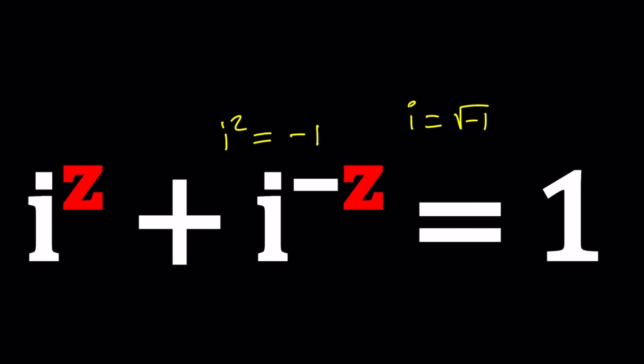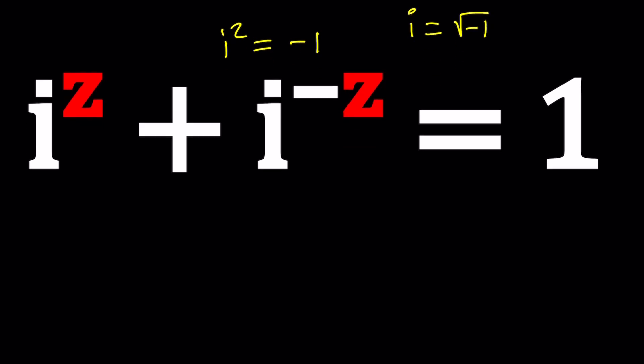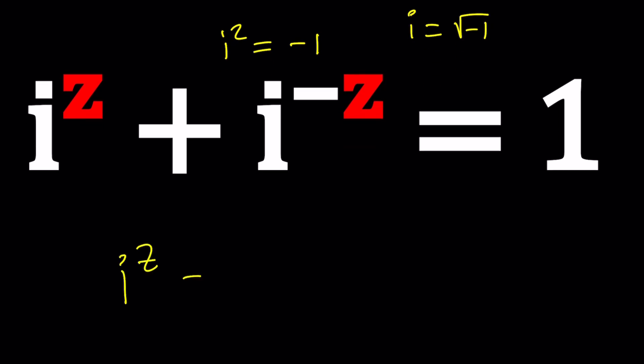So this is a nice problem and I thought about maybe giving you something like i to the power of z equals 1 or negative 1 or something like that. But then I thought, why don't we make it a little bit more interesting by including the reciprocal of i to the power of z, which is what we have, because this is going to turn into something nicer. So let's go ahead and see how this unfolds.